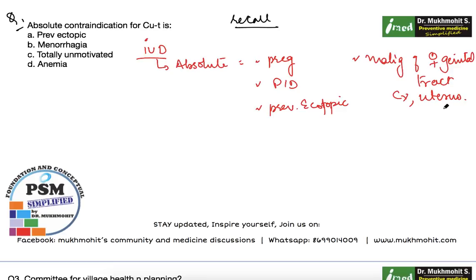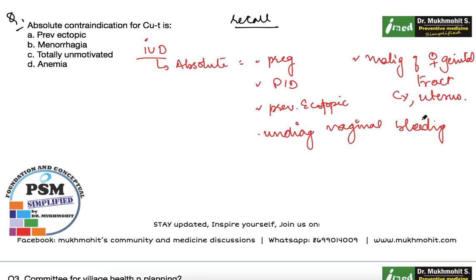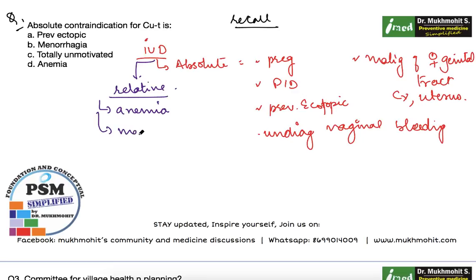Other absolute contraindications for IUDs include any malignancy of the female genital tract — cervix, uterus, or any other pelvic tumors — and undiagnosed vaginal bleeding. These are the absolute contraindications. The relative contraindications for intrauterine devices are anemia or menorrhagia.